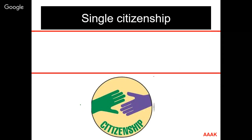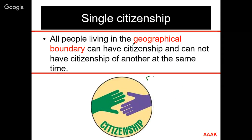Single citizenship: many countries allow dual citizenship — for example, UK allows dual nationality, meaning you can be a British citizen and also a citizen of another country. Many developed countries such as US, Australia and Switzerland have no restrictions on holding dual nationality. But our constitution recognizes only single citizenship. Anybody within the geographical boundary of India can have citizenship, but cannot hold citizenship of any other country simultaneously. If he gets citizenship of another country, he must forfeit the citizenship of India.